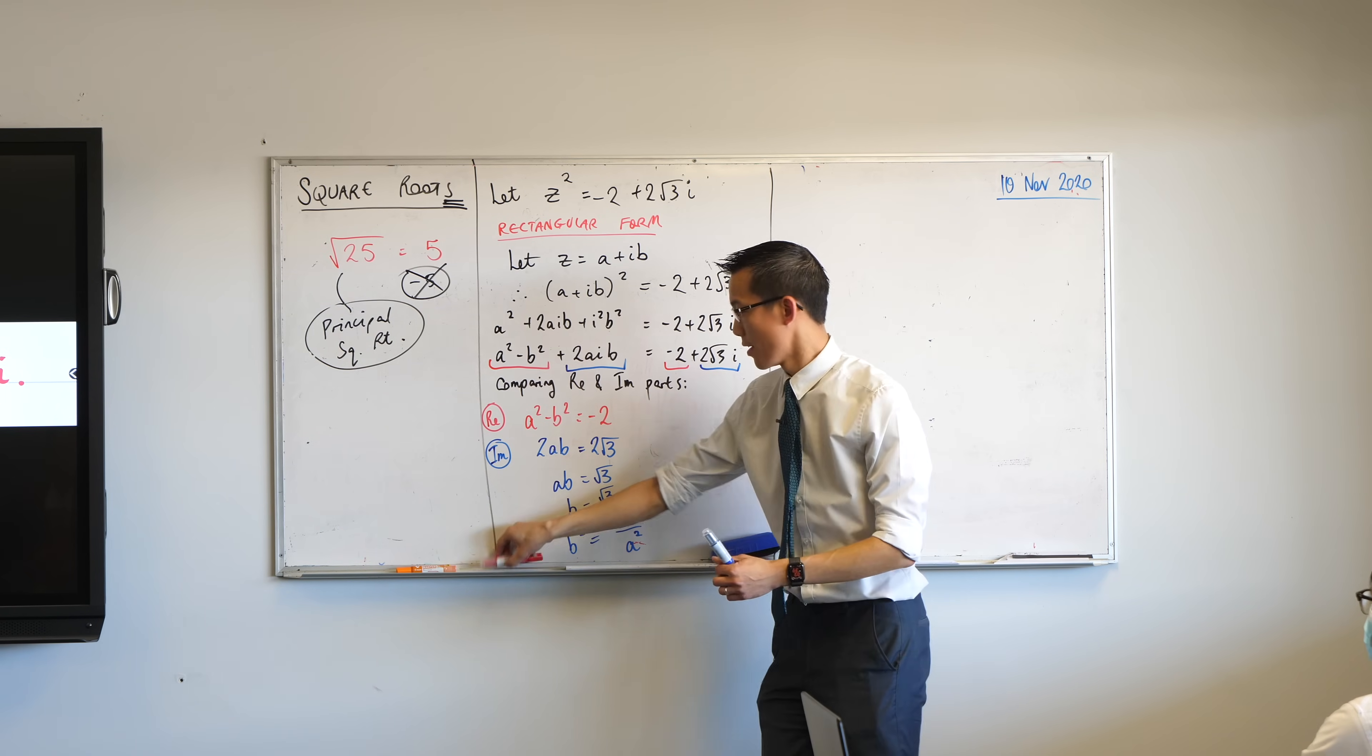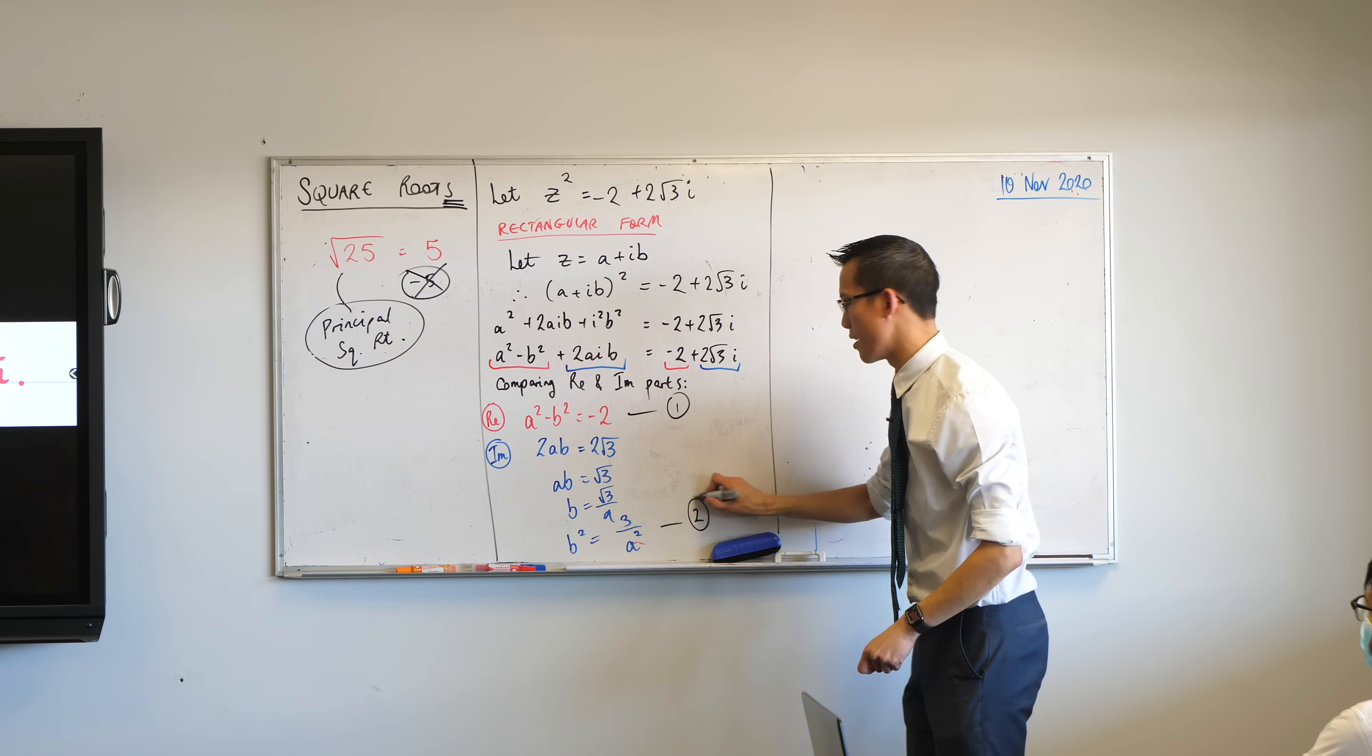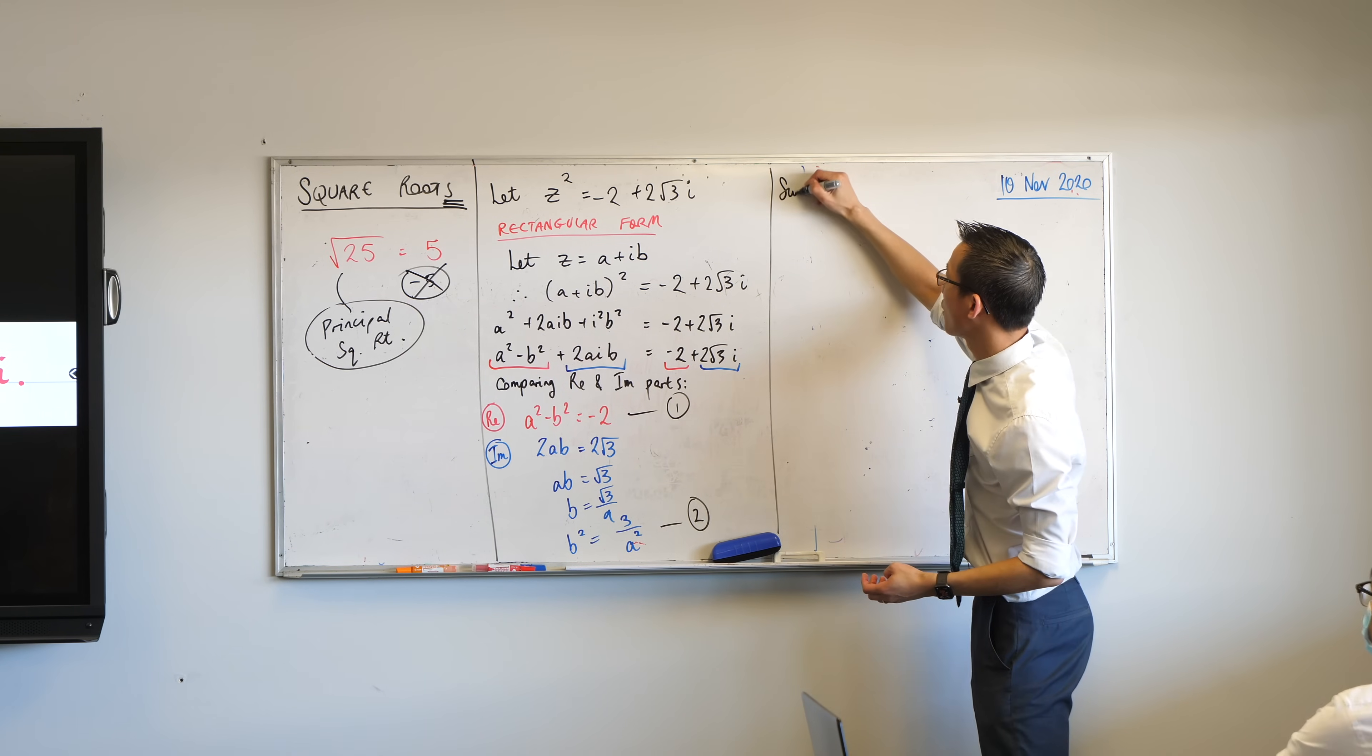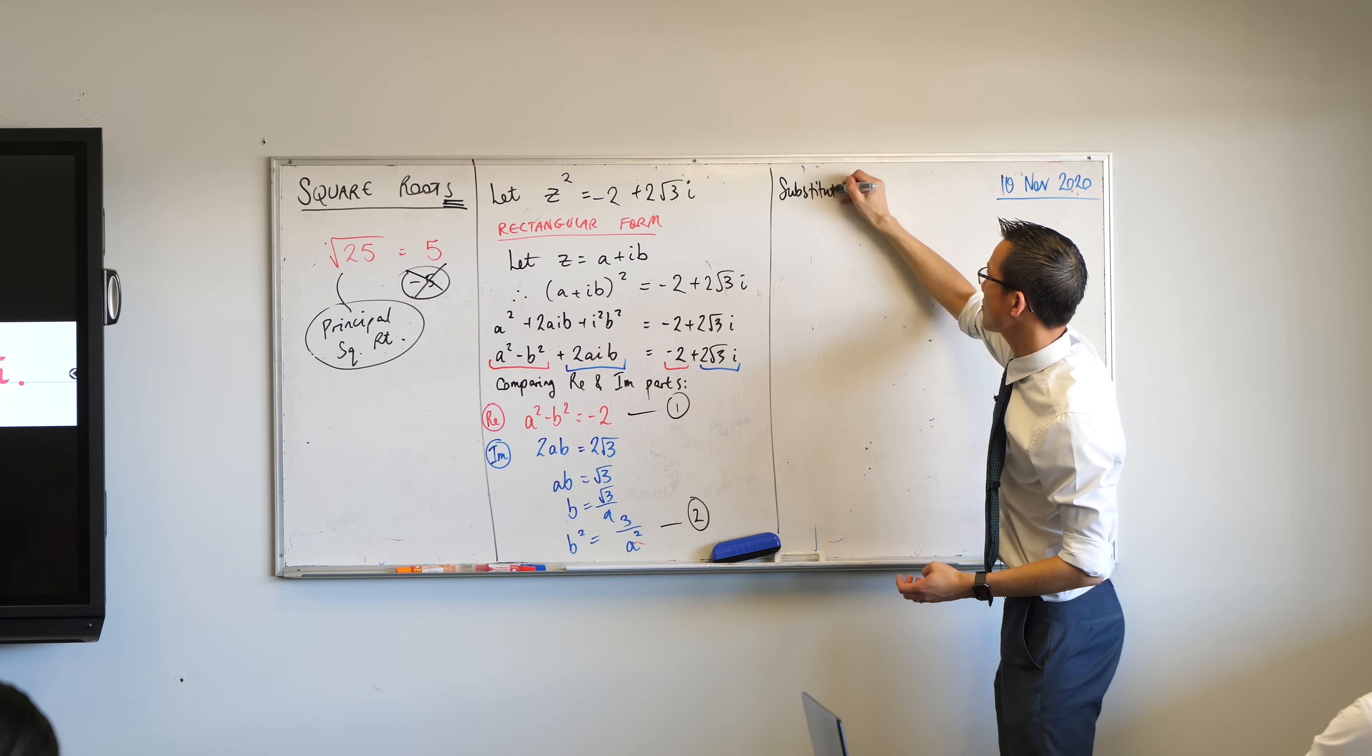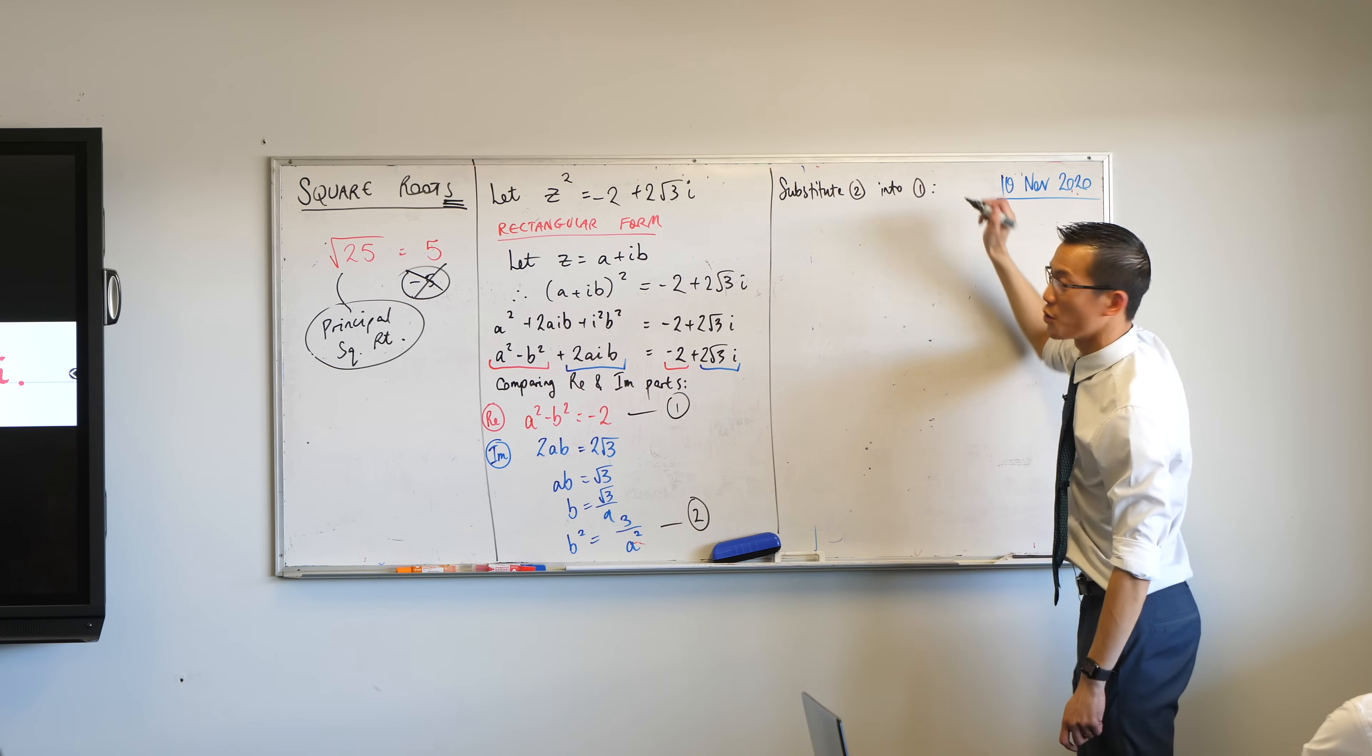Now it is really important. If you've gotten to this spot here, you should label what your equations are because they're simultaneous equations. You want to explain what's going on. I'm now going to substitute two, that's this result into here, into one.